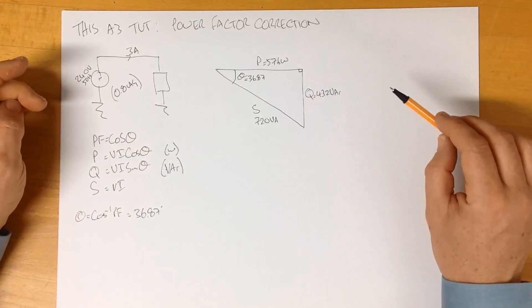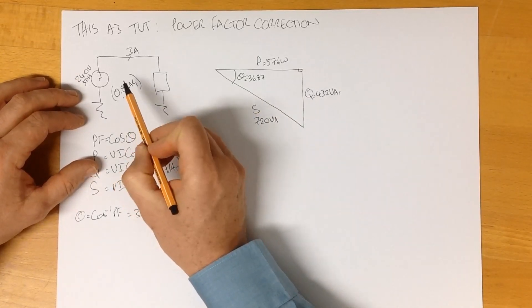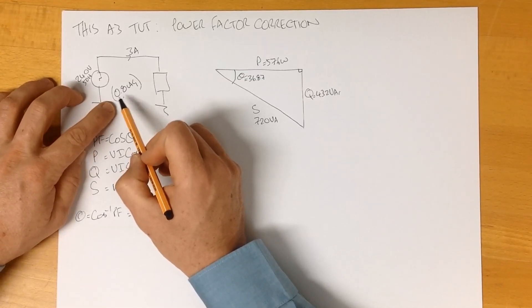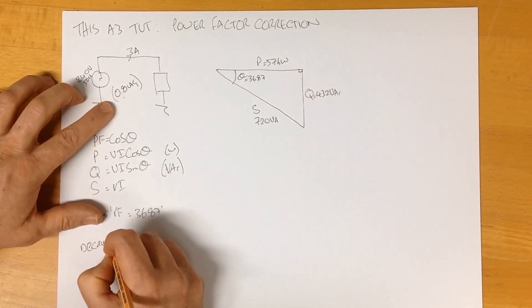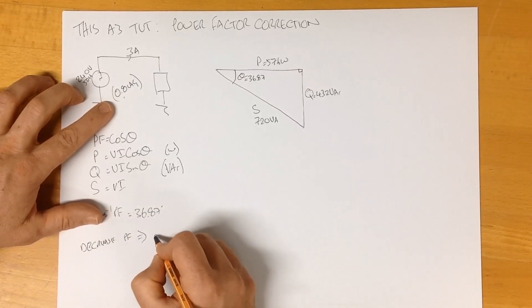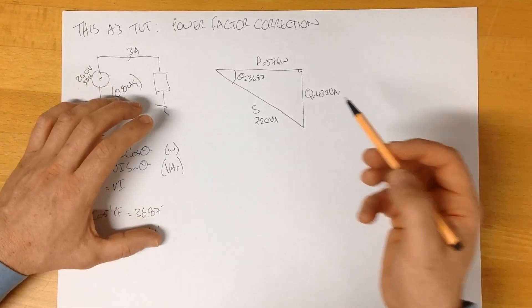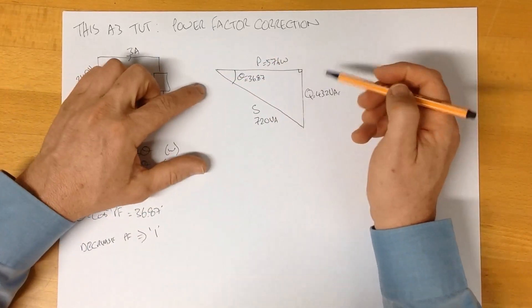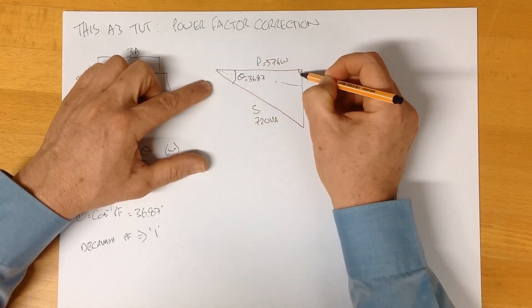The whole objective of power factor correction is to try and adjust this number here. Usually we want to, what we call, increase the power factor, which means make that number closer to one. In order to do that, we need to reduce this angle here. So what we're trying to do is we're trying to end up with a situation where our triangle will look like this.